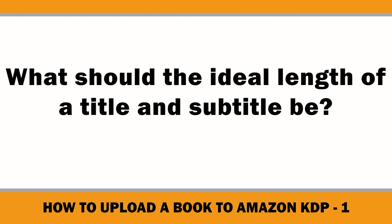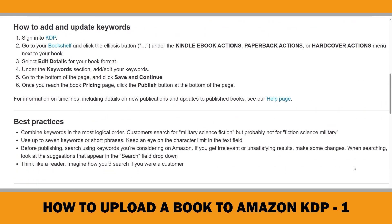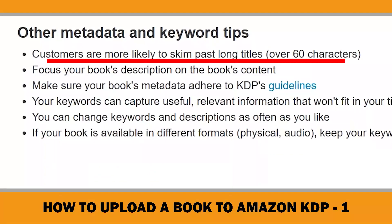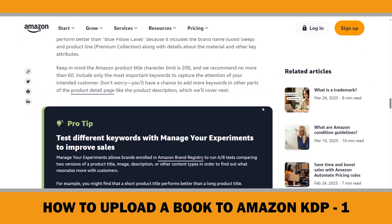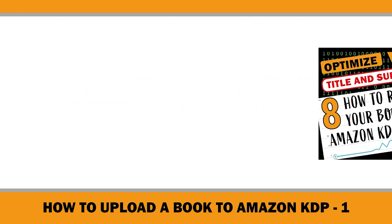A common question is: what should the ideal length of a title and subtitle be? Longer titles are harder to read and risk losing a customer's attention. According to the KDP Help Center, customers are more likely to skim past long titles over 60 characters. Similarly, the Amazon Help Center recommends keeping product titles concise — the Amazon product title character limit is 200, but they recommend no more than 60.